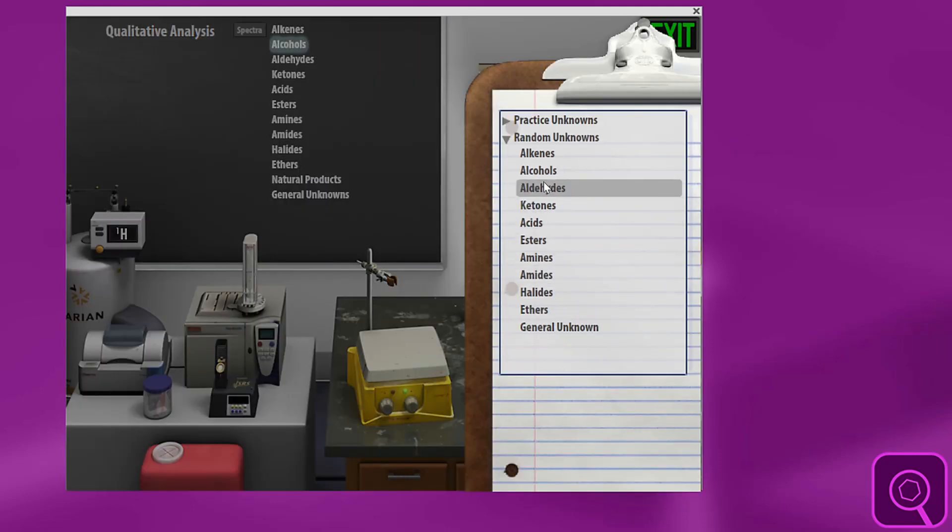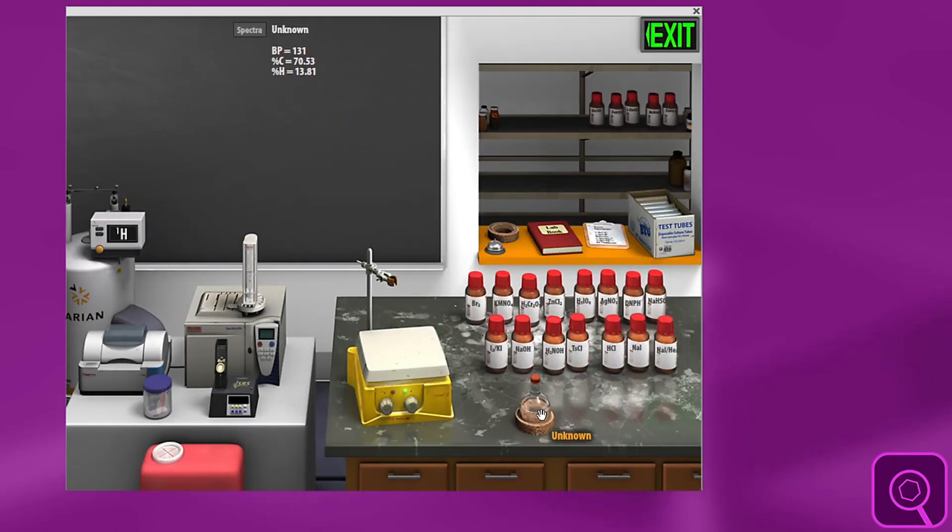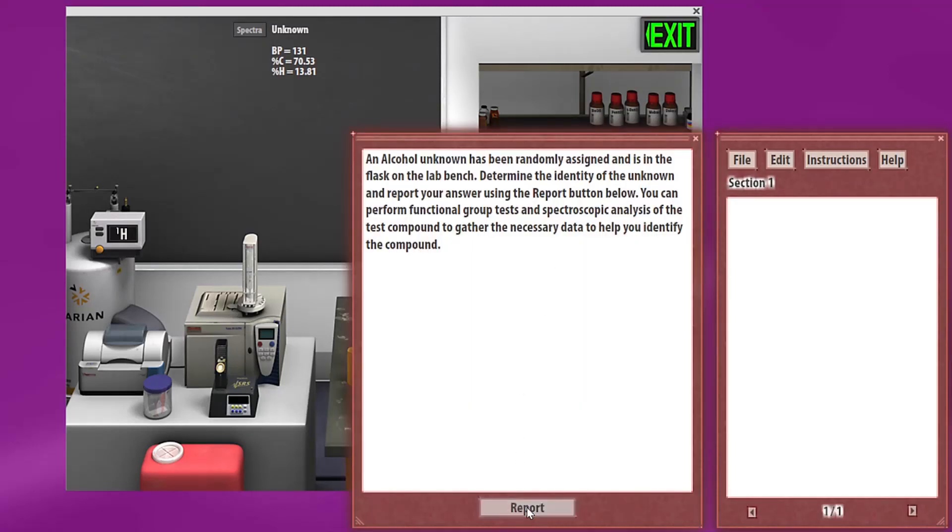The random unknowns, when a student clicks on those, prepare a round bottom flask with an unknown with no number on it. So the student would do all the tests, determine what they think they have, and then the way to report what they have is by clicking on the lab book, clicking report.